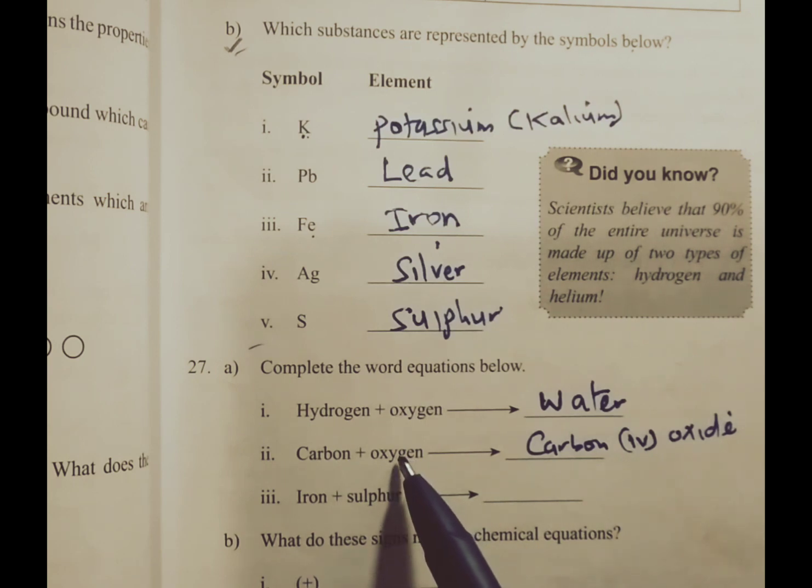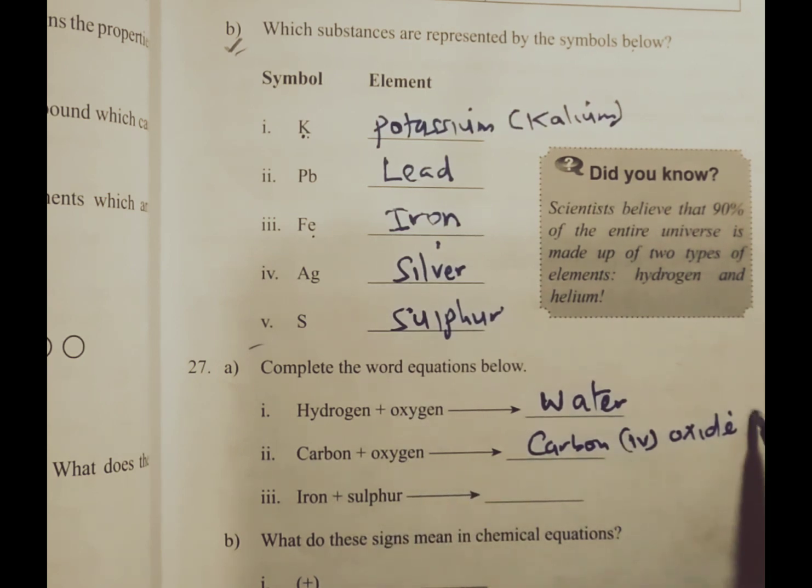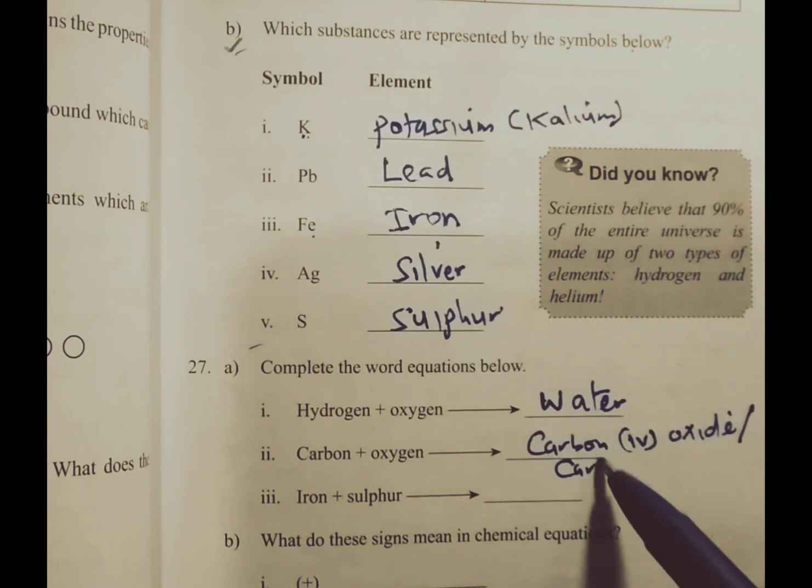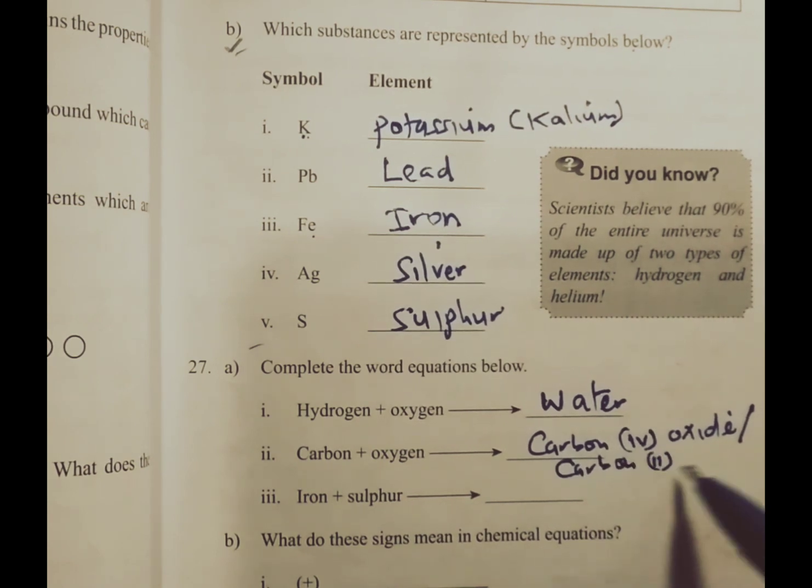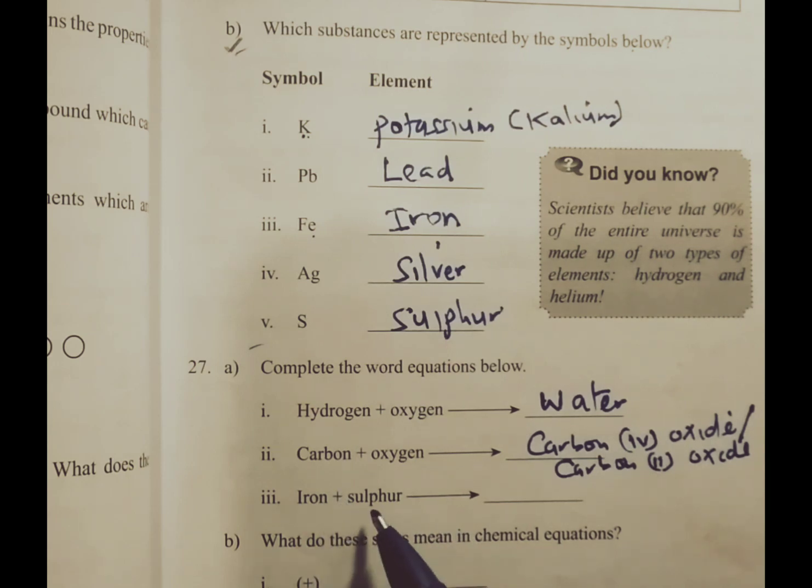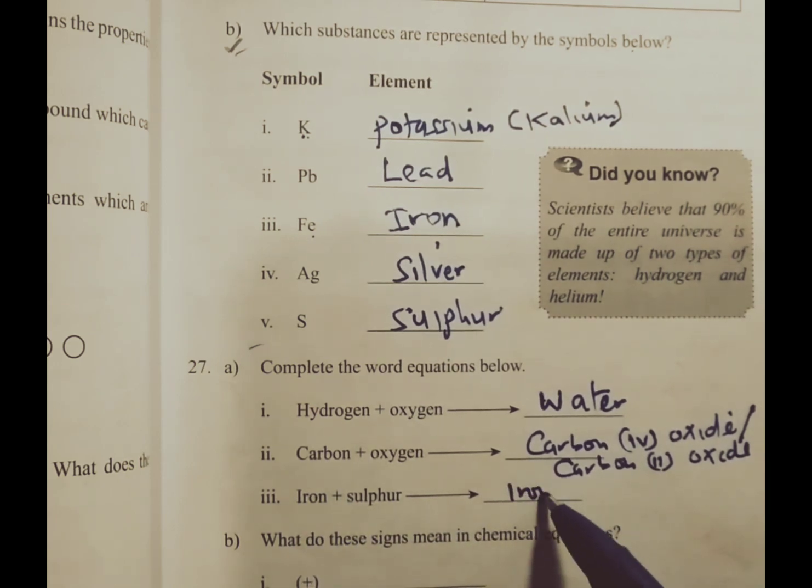But when there is limited amount of oxygen, we can as well get carbon monoxide. Iron plus sulfur will give us iron sulfide.